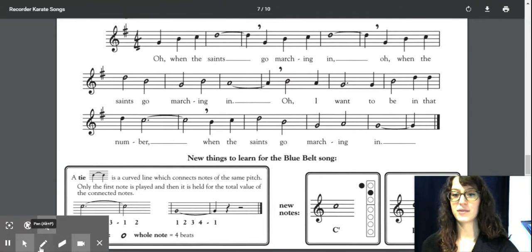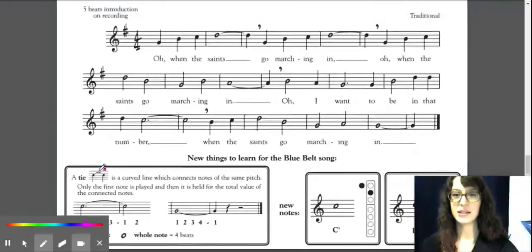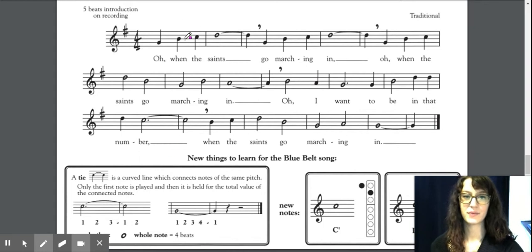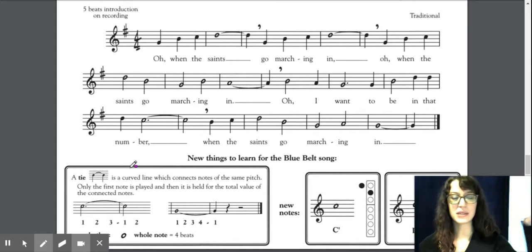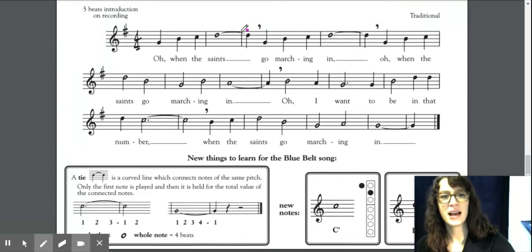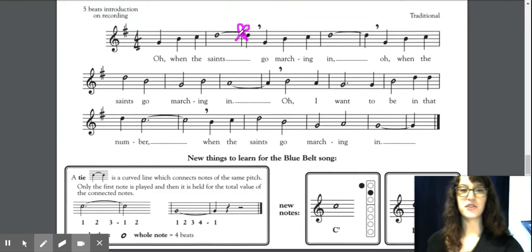First of all, we have a tie. A tie is a curved line which connects two notes that are the same pitch. So that means they're on the exact same space or line. Now a tie ties those notes together. There's a tie here - it's kind of tying these notes together, like my little bow tie.